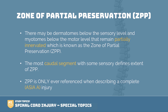The key point to take for your exam is that the zone of partial preservation is only ever referenced when describing a complete injury. If you need to go back and watch the ASIA video from last week, remember that the only level of the ASIA scale that is a complete injury is ASIA A.